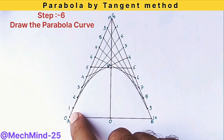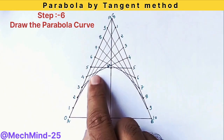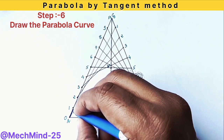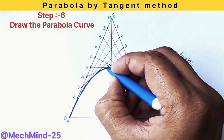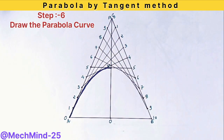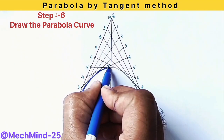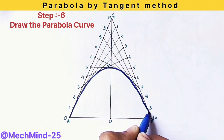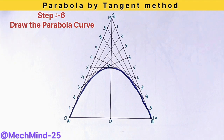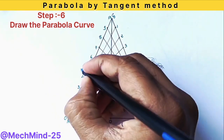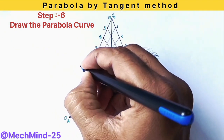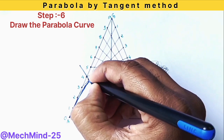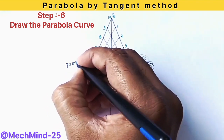Last step is draw the parabola curve. Now draw a smooth curve touching the points of intersection of the tangent lines. This curve represents the required parabola. Take care while sketching — the curve should pass tangentially through the intersections for a neat and accurate result.